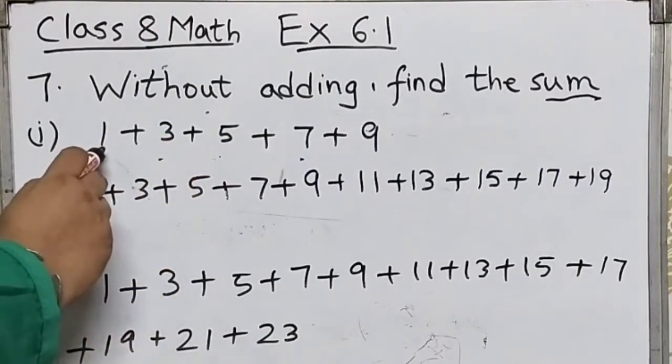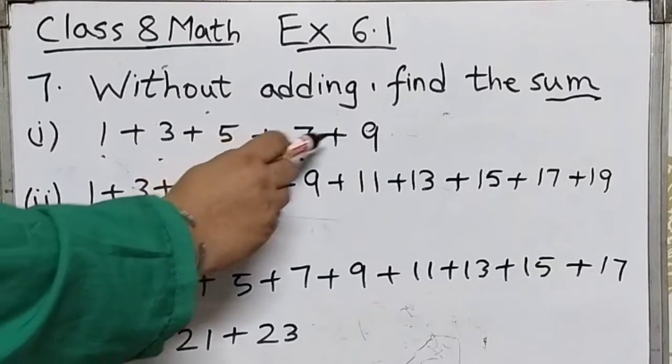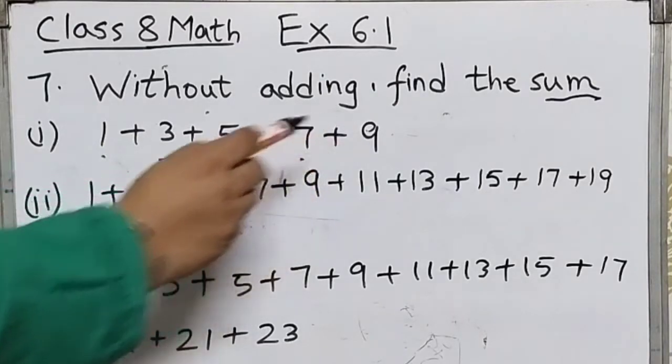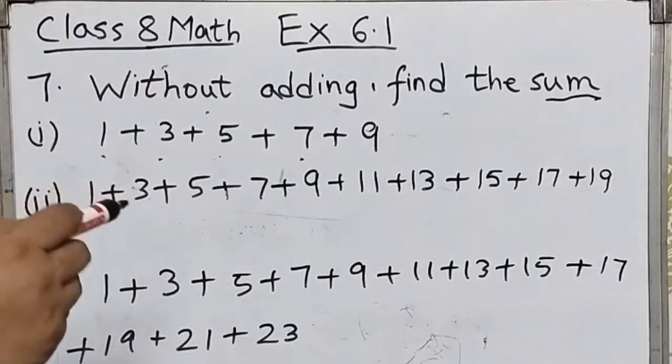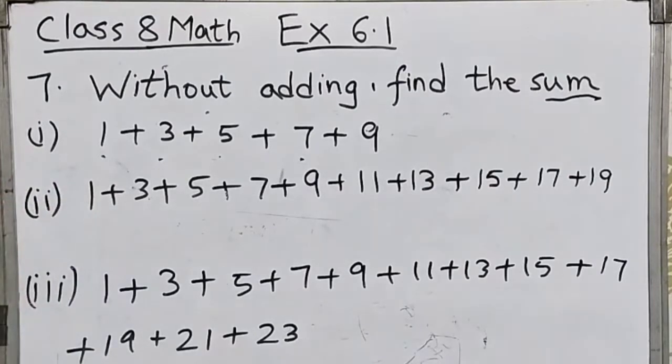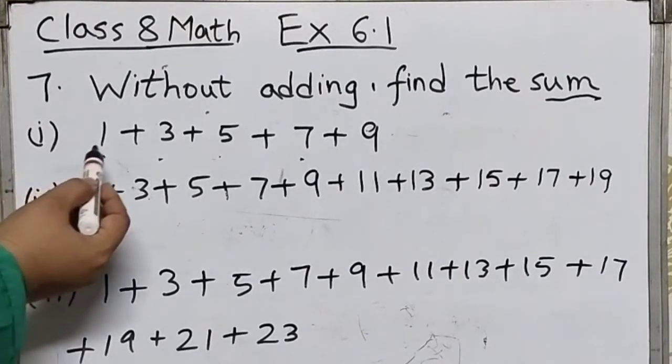Notice that these are all odd numbers: 1, 3, 5, 7, 9. We know that the sum of first n odd natural numbers is n squared. So just count how many odd numbers are there.